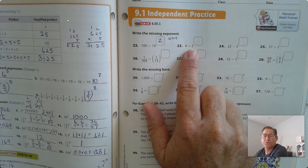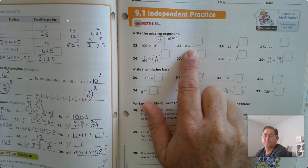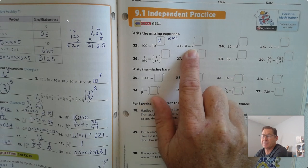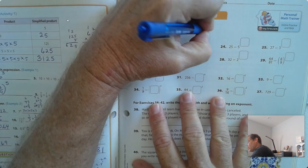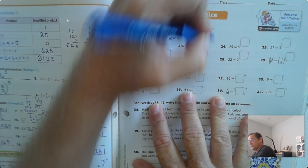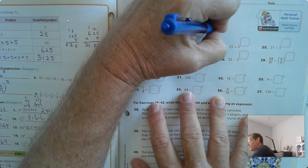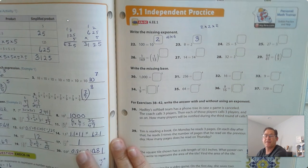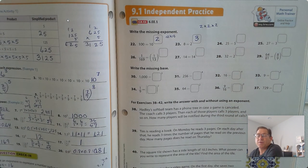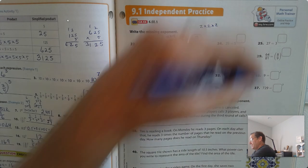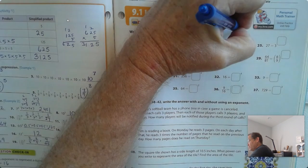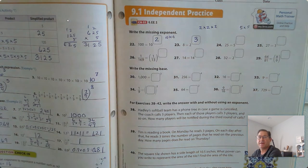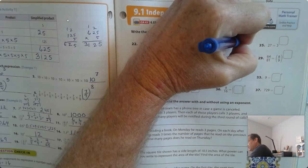8 equals 2 times what? How many times would you have to repeatedly multiply 2 to get 8? Well, 2 times 2 is 4. 4 times 2 is 8. So 3. How many times would you have to multiply 5 to get 25? Well, 5 times 5 is 25. So 5 squared.